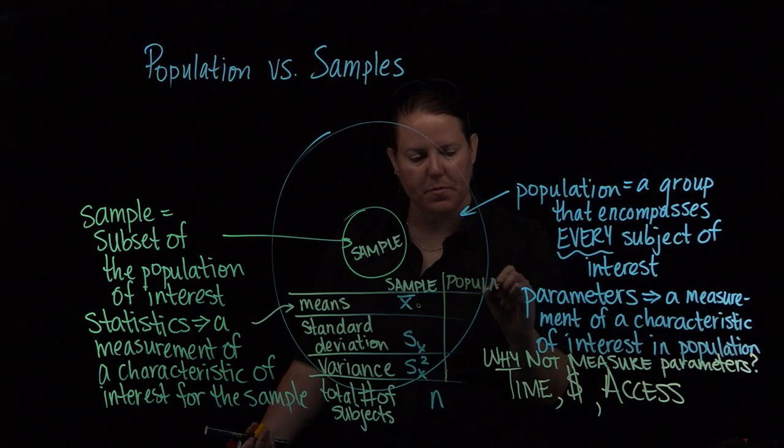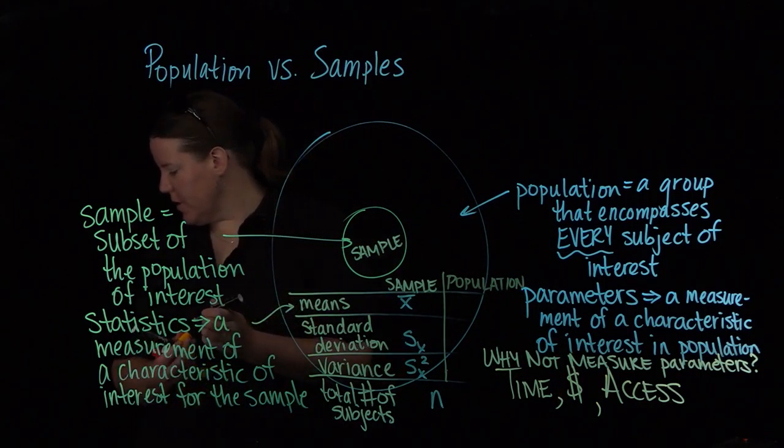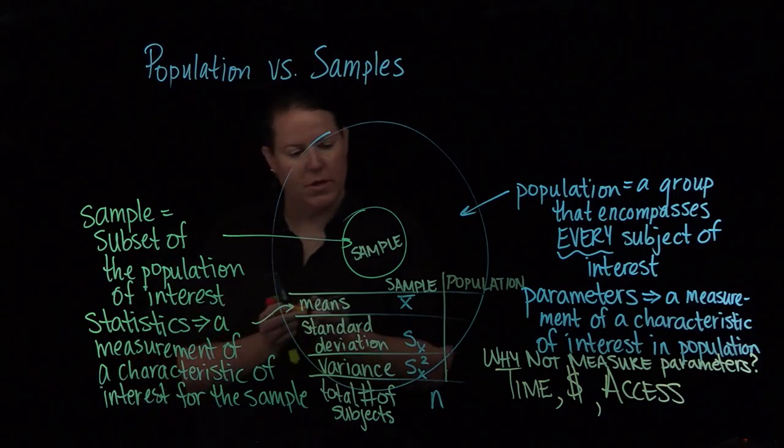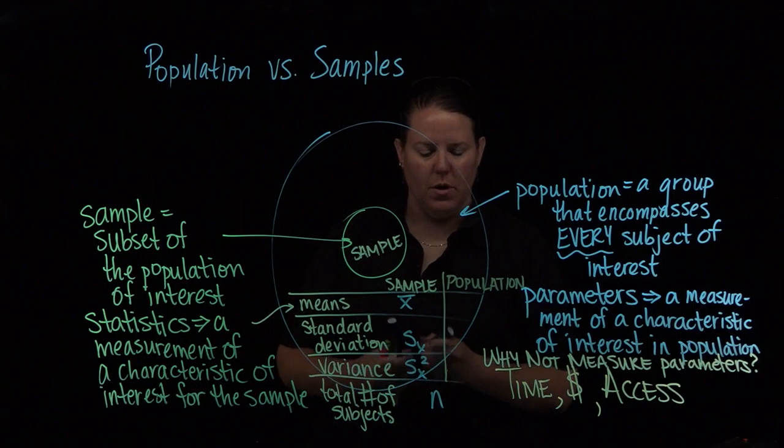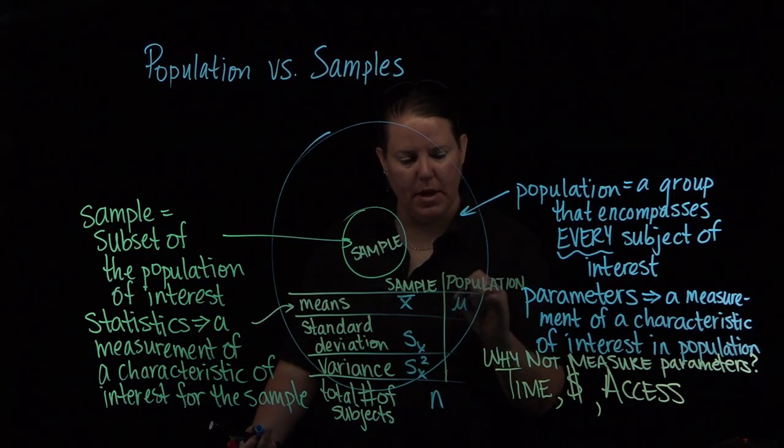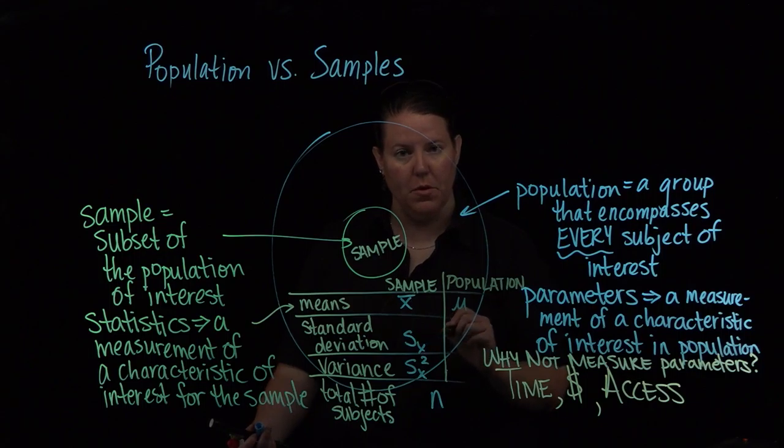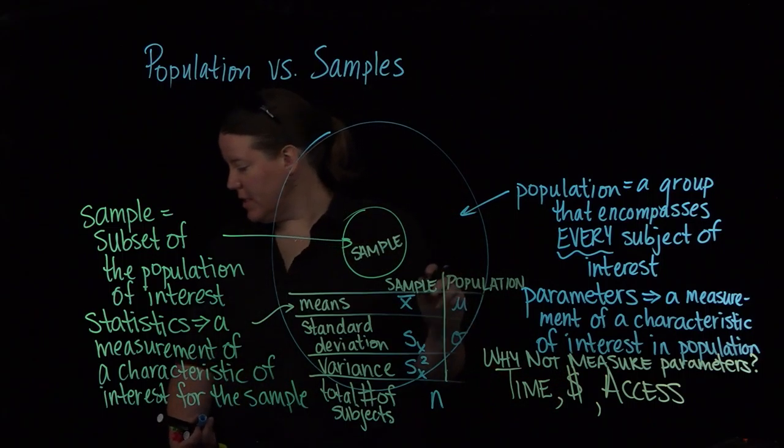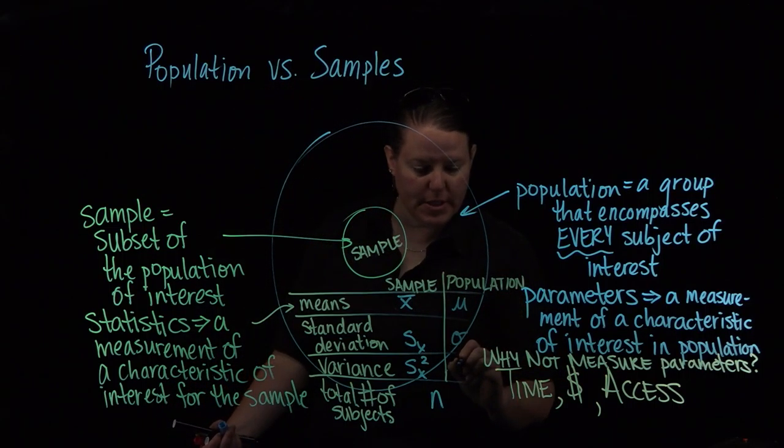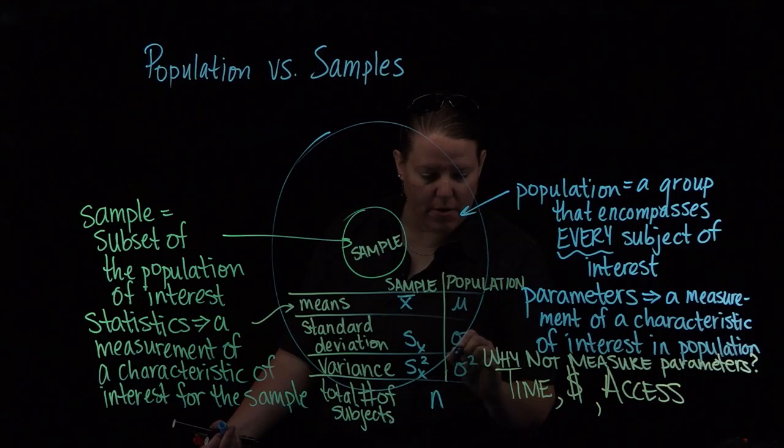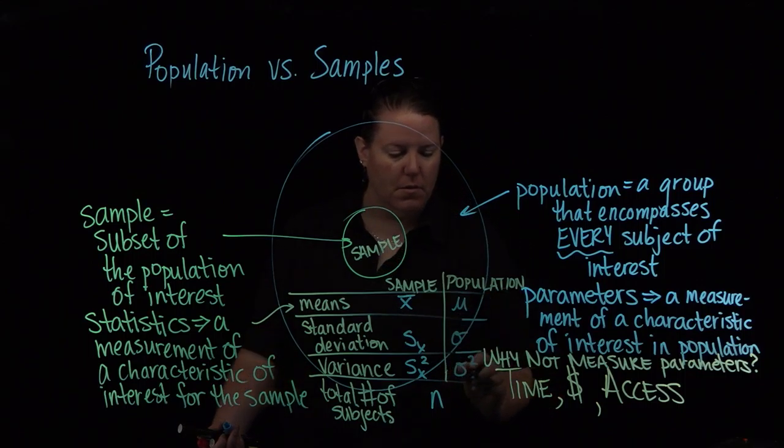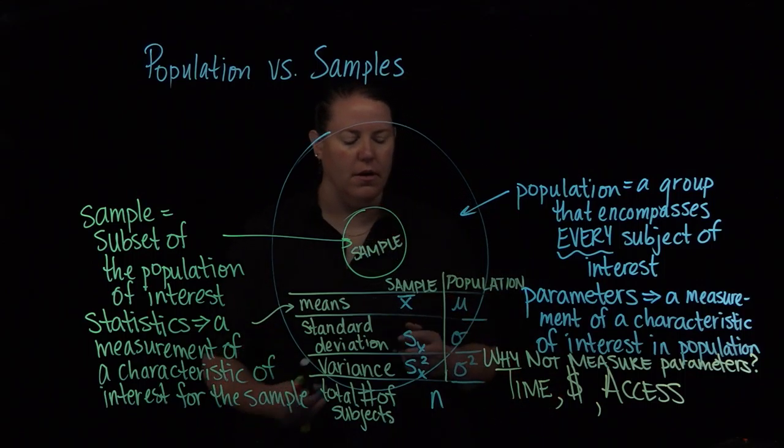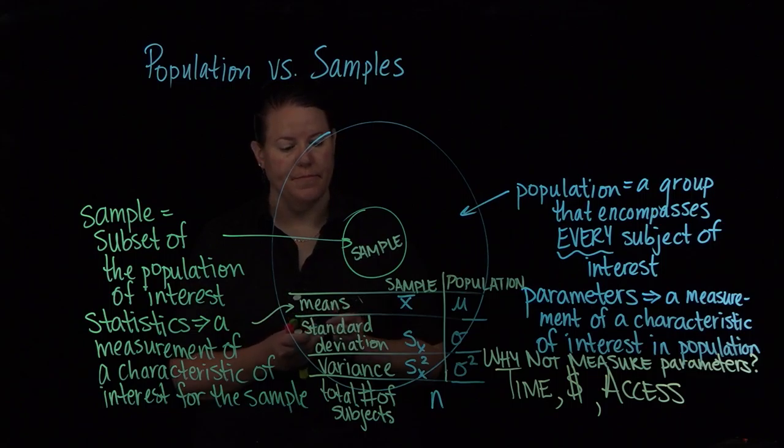If I'm talking about the population, then these get different letters. So here, when we talk about the population, we're going to show that mean by the Greek letter mu. Standard deviation is when you see sigma. And you can say sigma of x, or you could just say sigma. Sigma squared is going to be my designation of the variance.